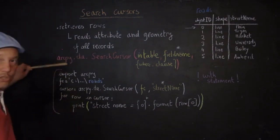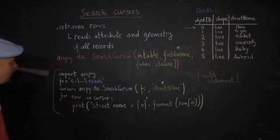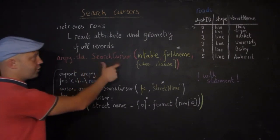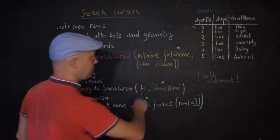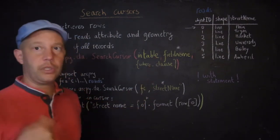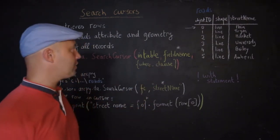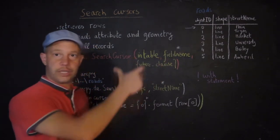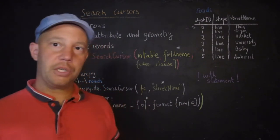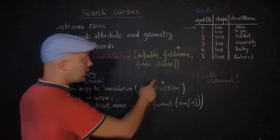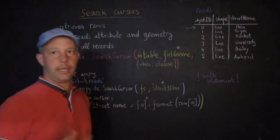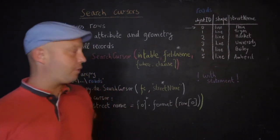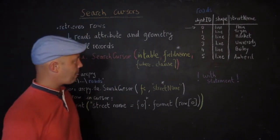The syntax you would typically use is: ArcPy.da.SearchCursor with the required arguments. The first is the in_table — the table you want to retrieve records from — and the second is the field name, which specifies which attributes to report. If you use an asterisk instead of the field name, it will return entries for all of the different columns. You may also have a where clause for SQL operations.